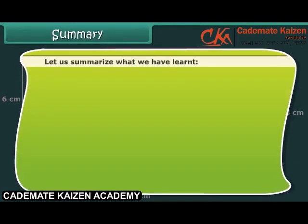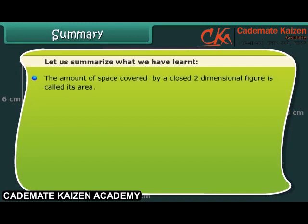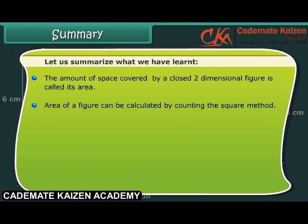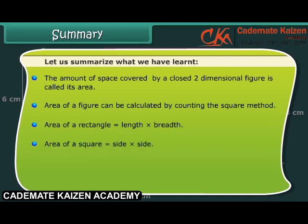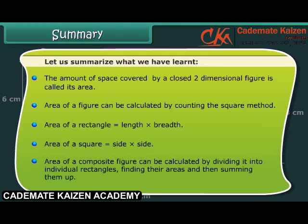Let us summarize what we have learned. The amount of space covered by a closed two-dimensional figure is called its area. Area of a figure can be calculated by the counting the squares method. Area of a rectangle is equal to length multiplied by breadth. Area of a square is equal to side multiplied by side. Area of a composite figure can be calculated by dividing it into individual rectangles, finding their areas, and then summing them up.